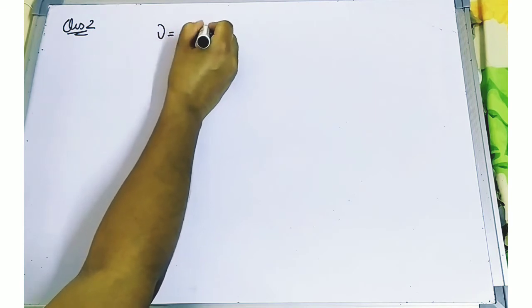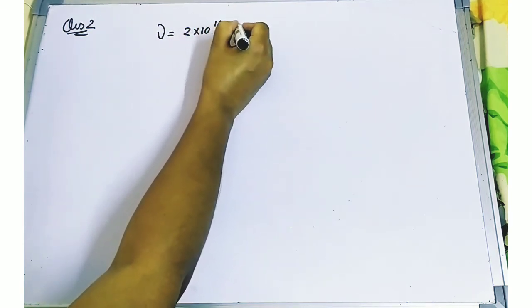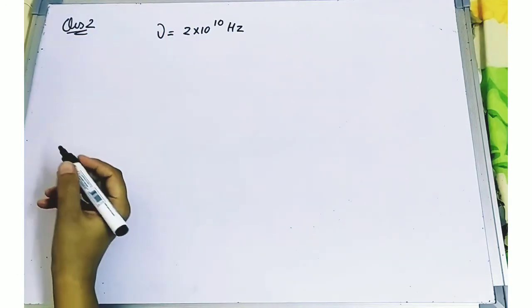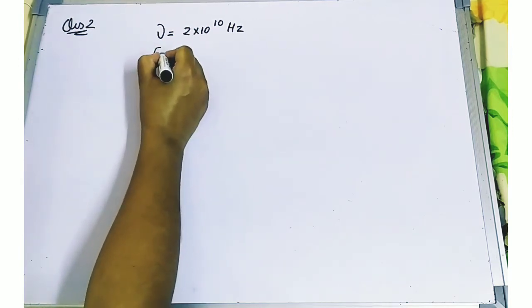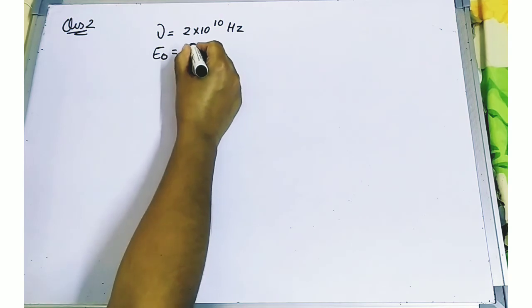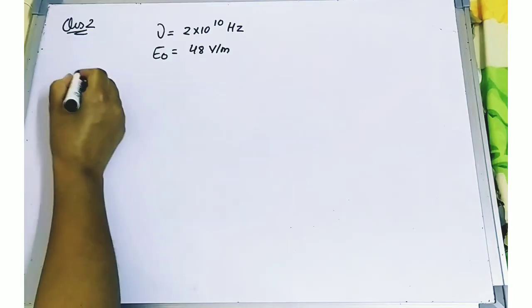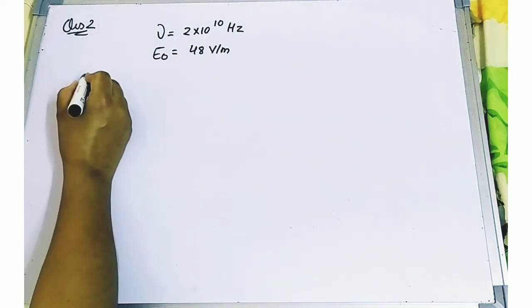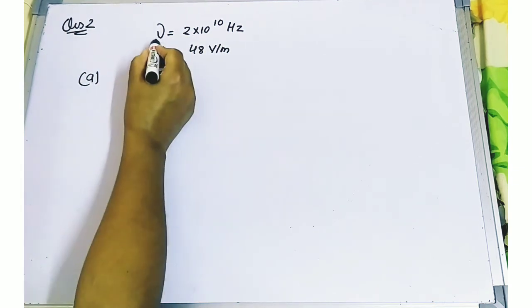Problem two: In a plane electromagnetic wave, the electric field oscillates sinusoidally with a frequency of 2 × 10¹⁰ Hz and amplitude of 48 volts per meter. We need to find: (a) the wavelength, (b) the amplitude of the oscillating magnetic field, and (c) the average energy density.